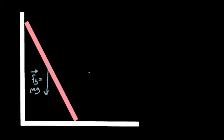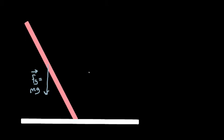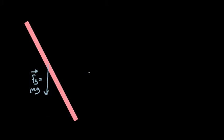Up top, where we make contact with the wall, we'll have a normal force and a frictional force. Down at the bottom, where we make contact with the floor, we'll have a normal force and a frictional force. The normal force is called normal because it's perpendicular to the surface — I'll call that normal force one. There's also a frictional force up there; frictional forces are always parallel to the surface. If there were no friction, this point would start to slide downward, so our frictional force must act straight upward — we'll call that friction one.